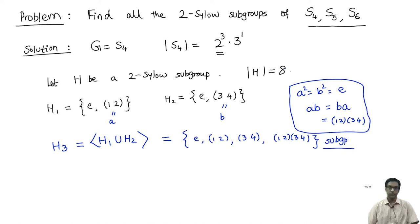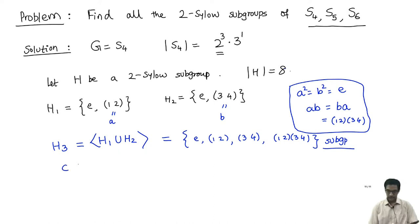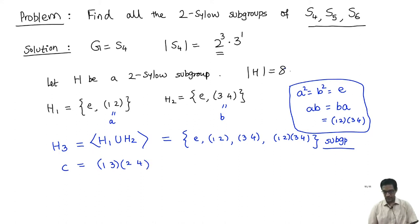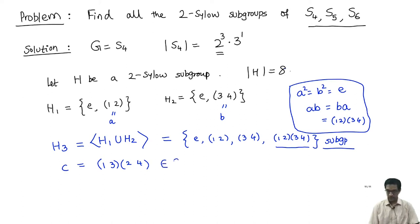To get to order 8, here is the element that will do the trick. Consider C = (1 3)(2 4). Let us see its properties. First, C is an order 2 element. Unlike the element (1 2)(3 4), this element C does not commute with A and B. If you conjugate — computing CAC⁻¹ — recall that in symmetric groups conjugation simply replaces each entry by where C sends it.